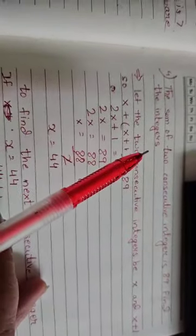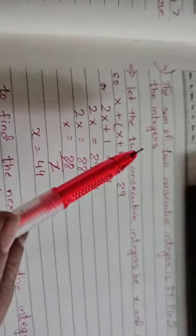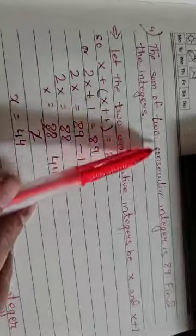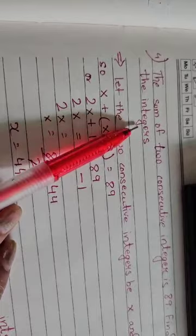Here is a sum on integers which students often get confused about, but it is very logical. You just have to understand it. The sum of two consecutive integers is 89. Find the integers.